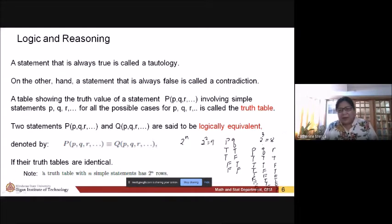So, meaning to say pag mas marami pa dito yung statements, P, Q, R, S, you will have two to the fourth, which will give you sixteen. But usually, medyo mahaba na yung mga ayun, usually just have your three statements for an example. Okay? So, two to the n rows, yun yung, if you have n simple statements.